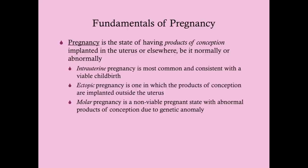Normally, a sperm and egg come together, form the embryo, which becomes the blastocyst, which then implants normally in the uterus — that's called an intrauterine pregnancy. If a woman has a positive pregnancy test and you do an ultrasound, you want to see an intrauterine pregnancy, because that is healthy and normal.